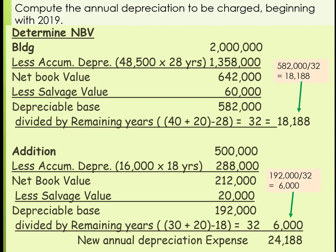That's how you handle a change in estimate. You stop at a point in time, recalculate the net book value, subtract out the salvage value if it's changed, and then use the remaining years. Using remaining years gives you a new depreciation rate.